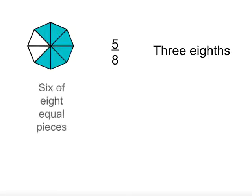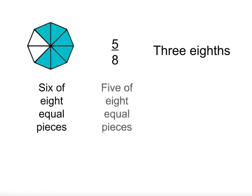The picture is showing 6 of 8 equal pieces. The symbols are describing 5 of 8 equal pieces. And the words are describing 3 of 8 equal pieces. Because they are all describing fractions with 8 equal size pieces, we can order them easily.